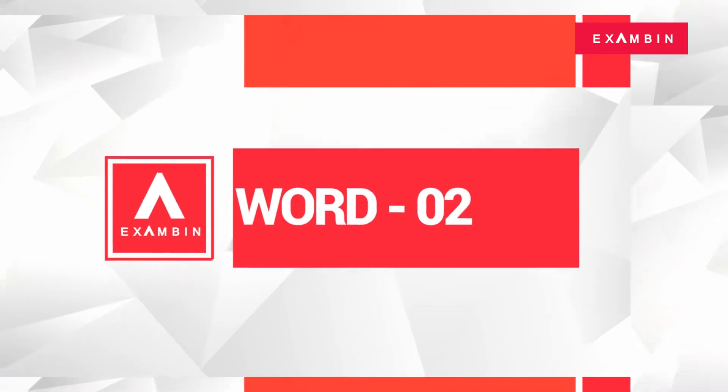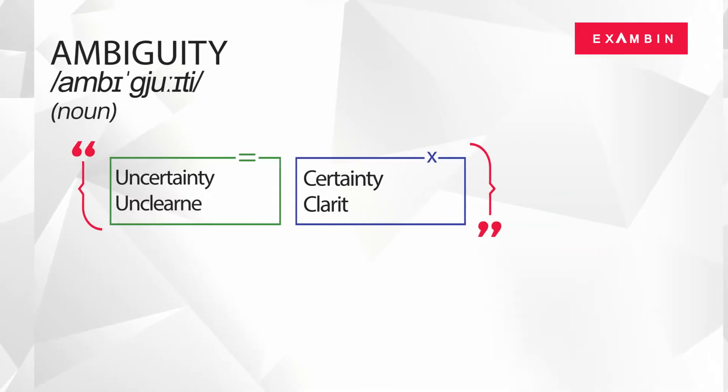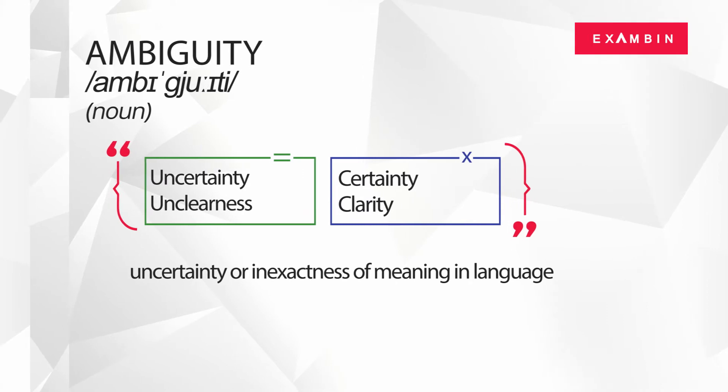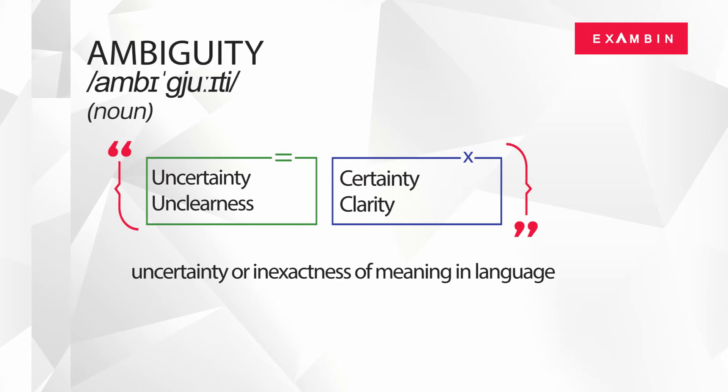The second word of the day is: Ambiguity. The word ambiguity is a noun. The direct synonyms of ambiguity are: Uncertainty, Unclearness. In general context, the word ambiguity means uncertainty or inexactness of meaning in language. Certainty and Clarity are some of the terms referring to the opposite meaning of the word ambiguity.